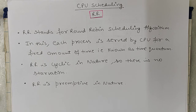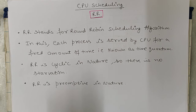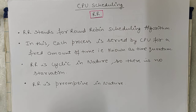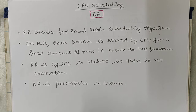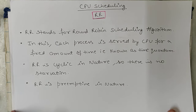RR is also preemptive in nature because every process gets CPU access for only a particular amount of time. Suppose P1 has burst time 5 minutes and P2 has burst time 10 minutes. If the time quantum is 2 minutes, P1 and P2 both will get the CPU for 2 minutes. So every process will get the CPU for a particular amount of time. Let's discuss this in detail with the help of an example.